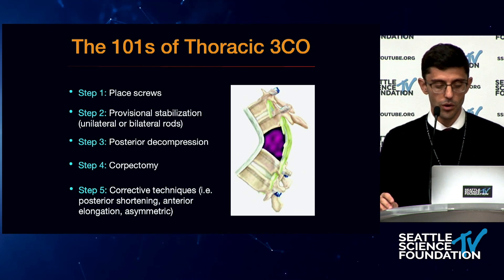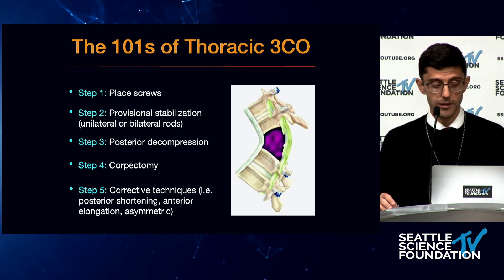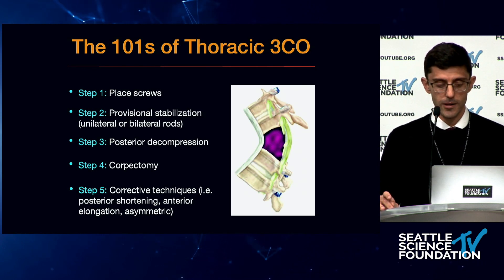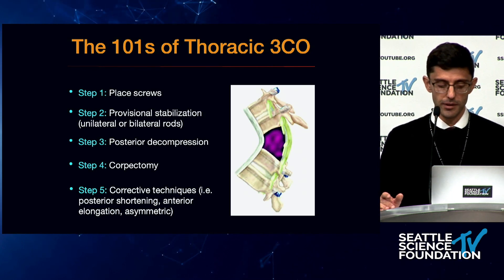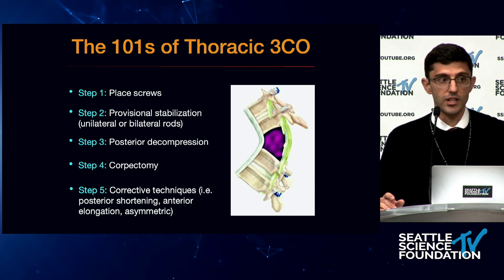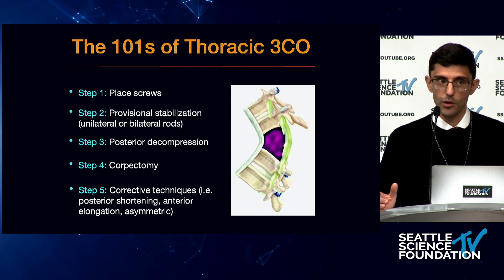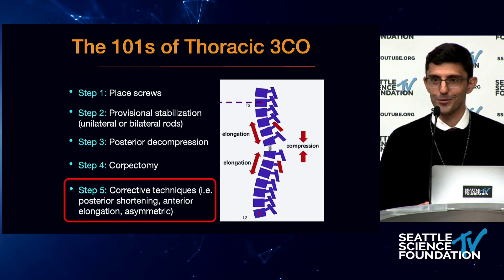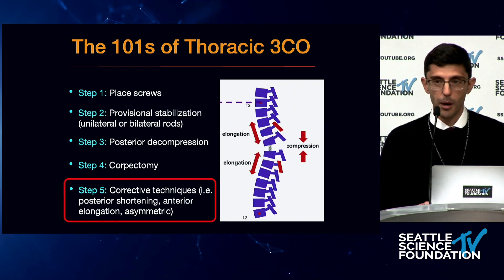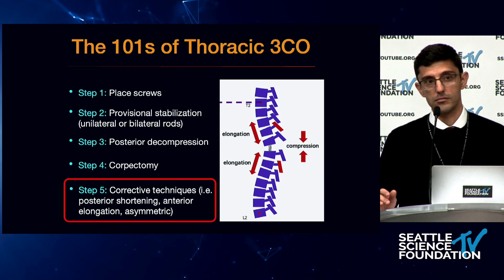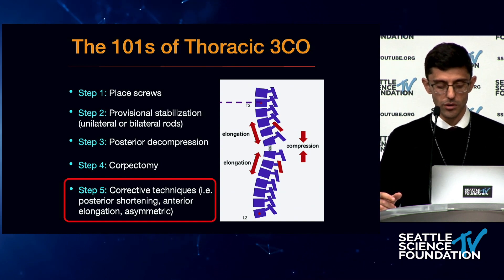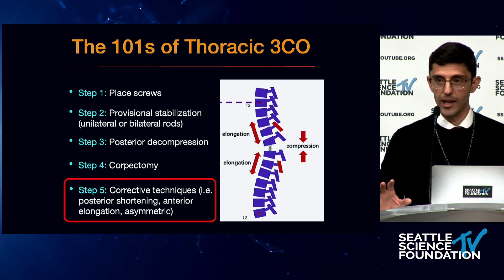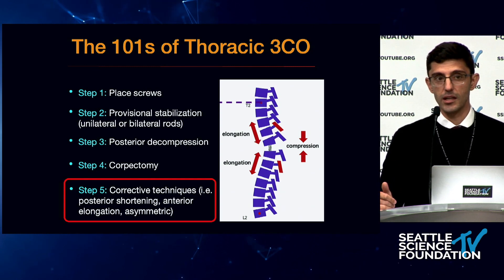The second step is to provide stabilization while performing your decompression — place provisional stabilization either unilaterally or bilaterally. That is followed by performing a posterior decompression, then the corpectomy of the VCR. Then you get to the corrective techniques, which are often centered around shortening the posterior column. But if you want to correct severe deformities, it's important to lengthen the anterior column.